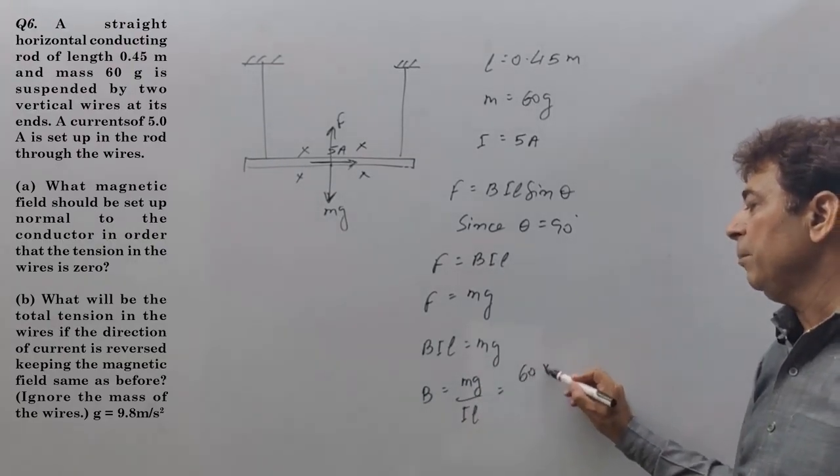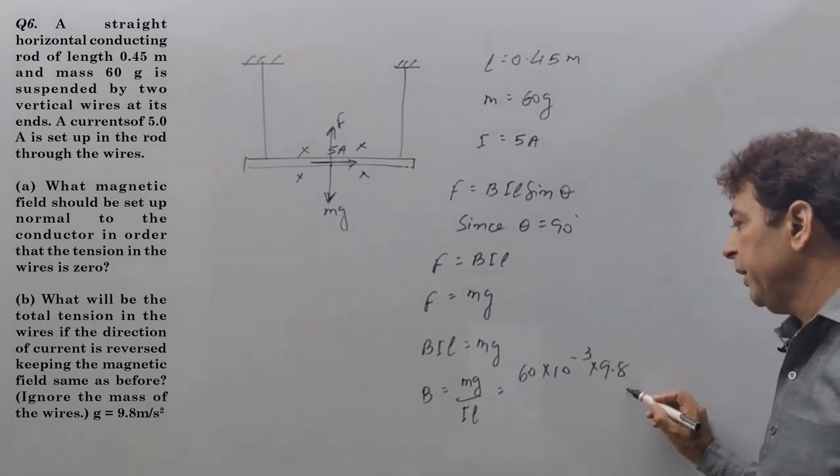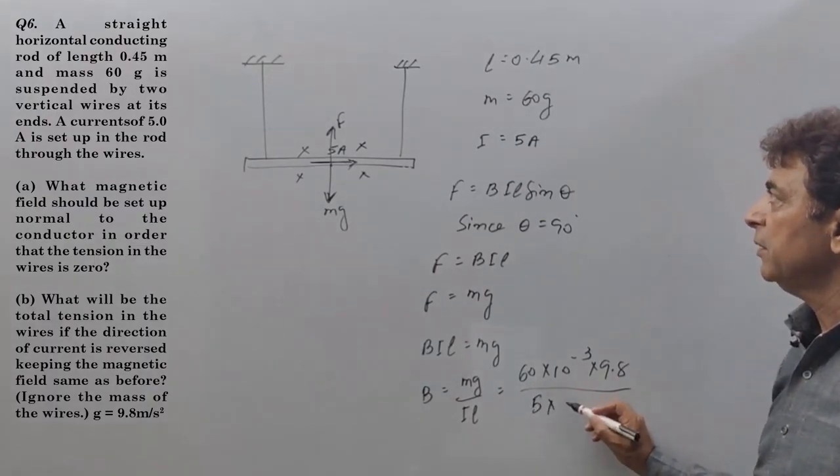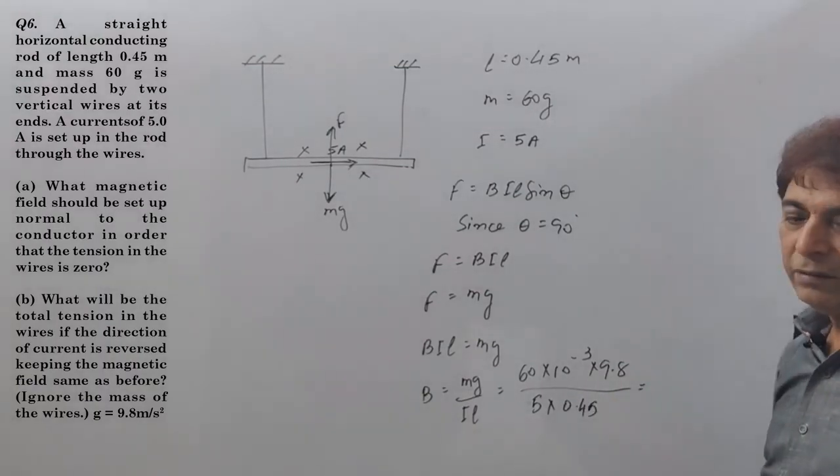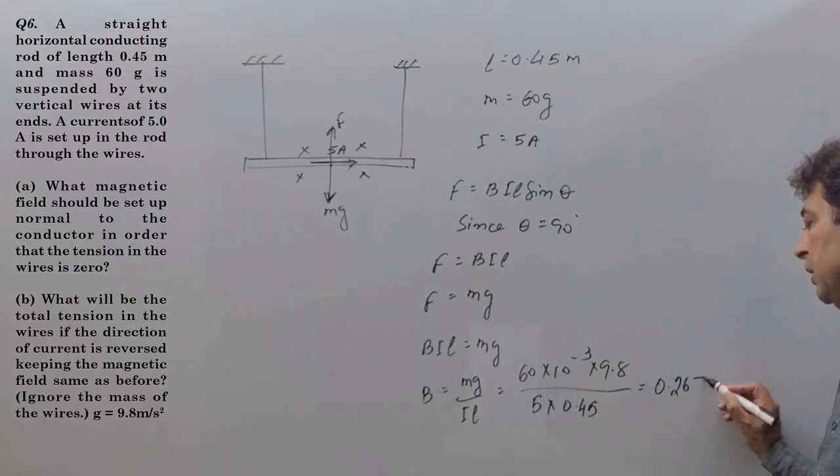M, the mass 60 gram, G 9.8, current 5 ampere, and length is 0.45 meter. That gives us the value of magnetic field 0.26 tesla.